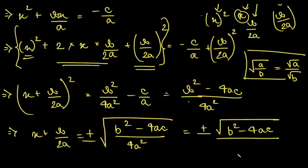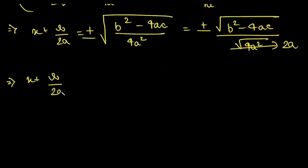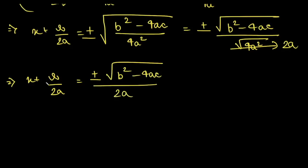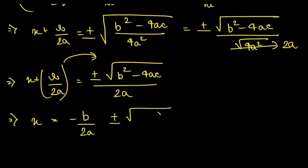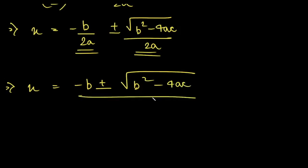Taking the square root of both sides and applying the plus minus sign, we get x plus b by 2a is equal to plus minus root over of b squared minus 4ac divided by 2a. Moving b by 2a to the RHS, we get x is equal to minus b by 2a plus minus root over of b squared minus 4ac divided by 2a. Since the denominator is the same, we simply combine them: x is equal to minus b plus minus root over of b squared minus 4ac, all divided by 2a. And we are done.